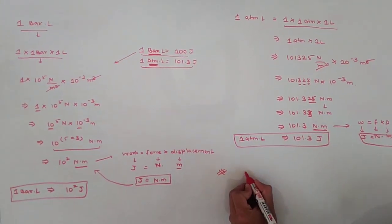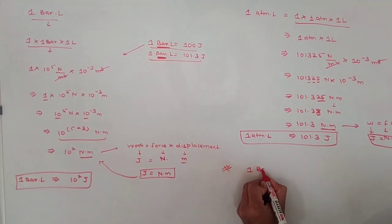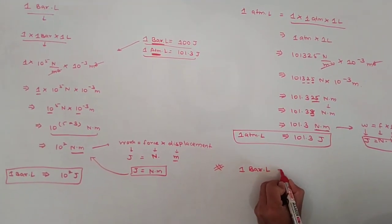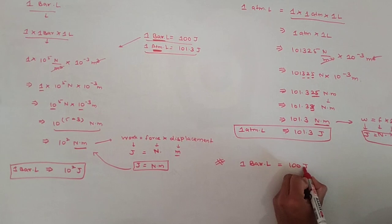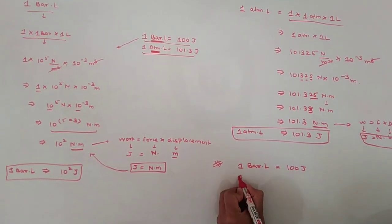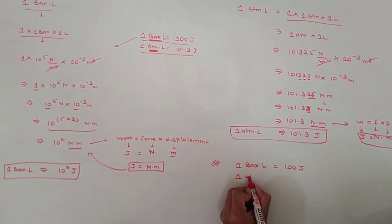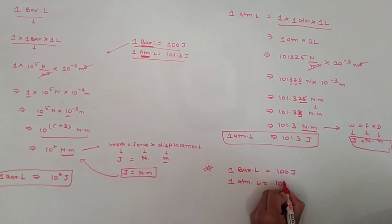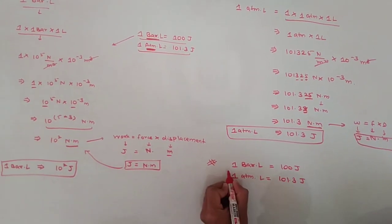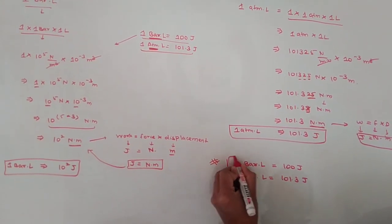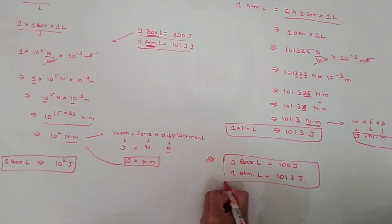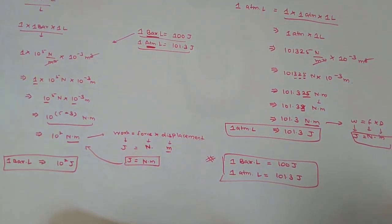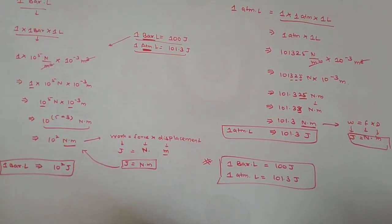So the final conclusion is: 1 bar·litre equals 100 joules, and 1 atmosphere·litre equals 101.3 joules. I hope you enjoyed this class. Thank you.